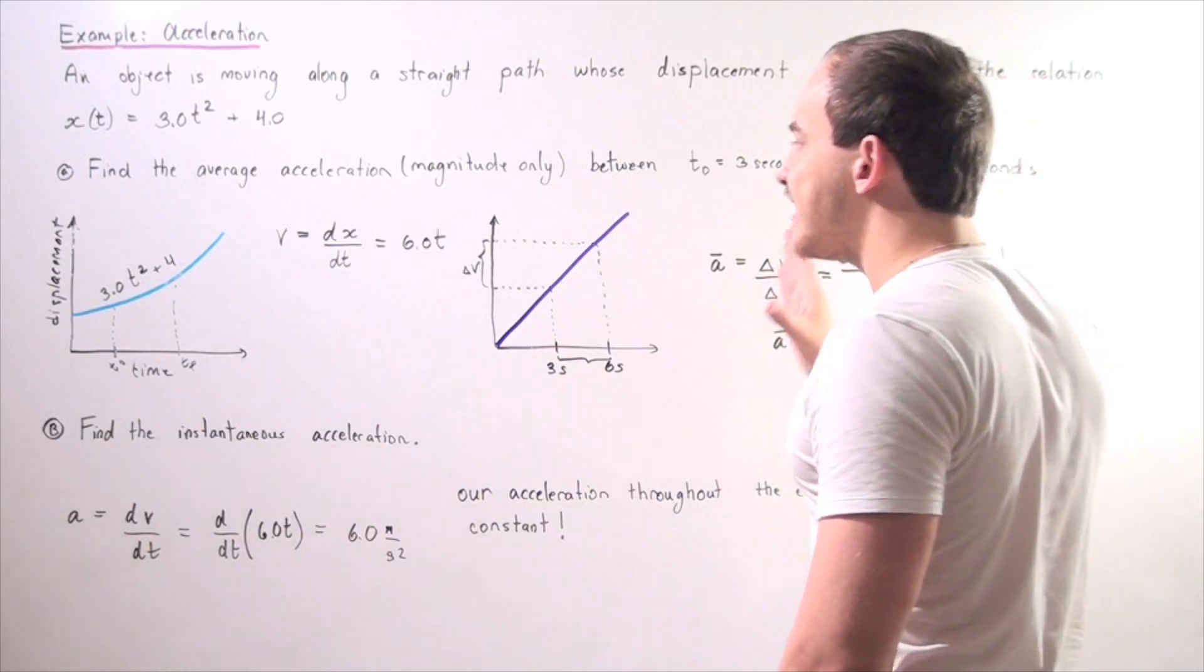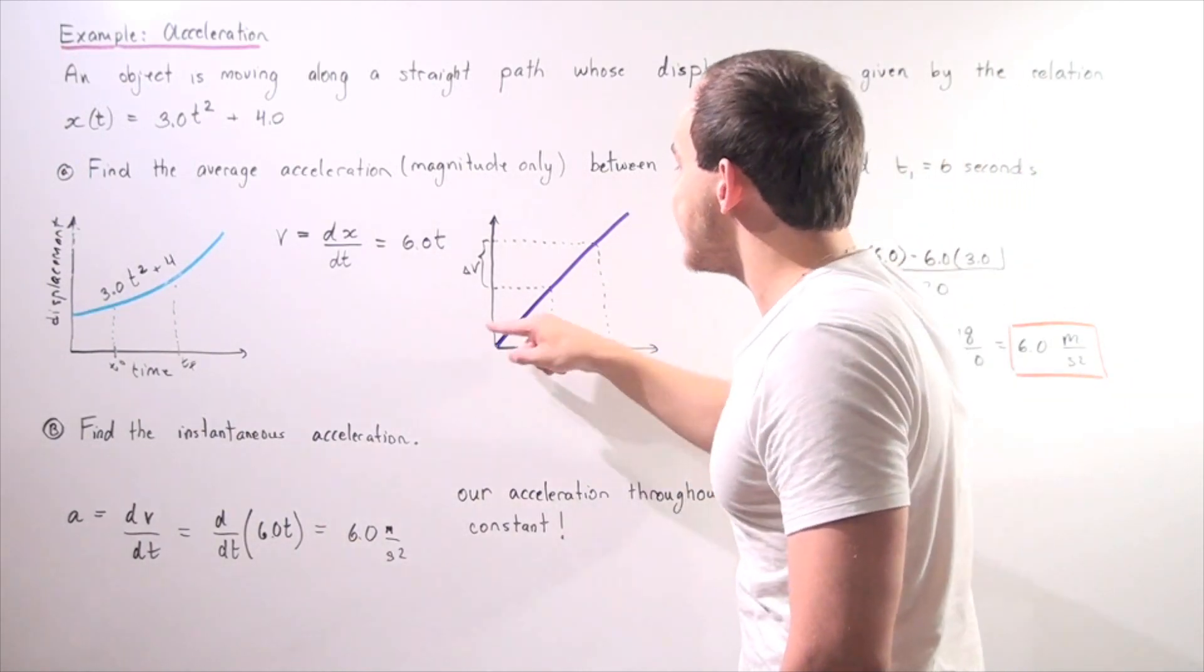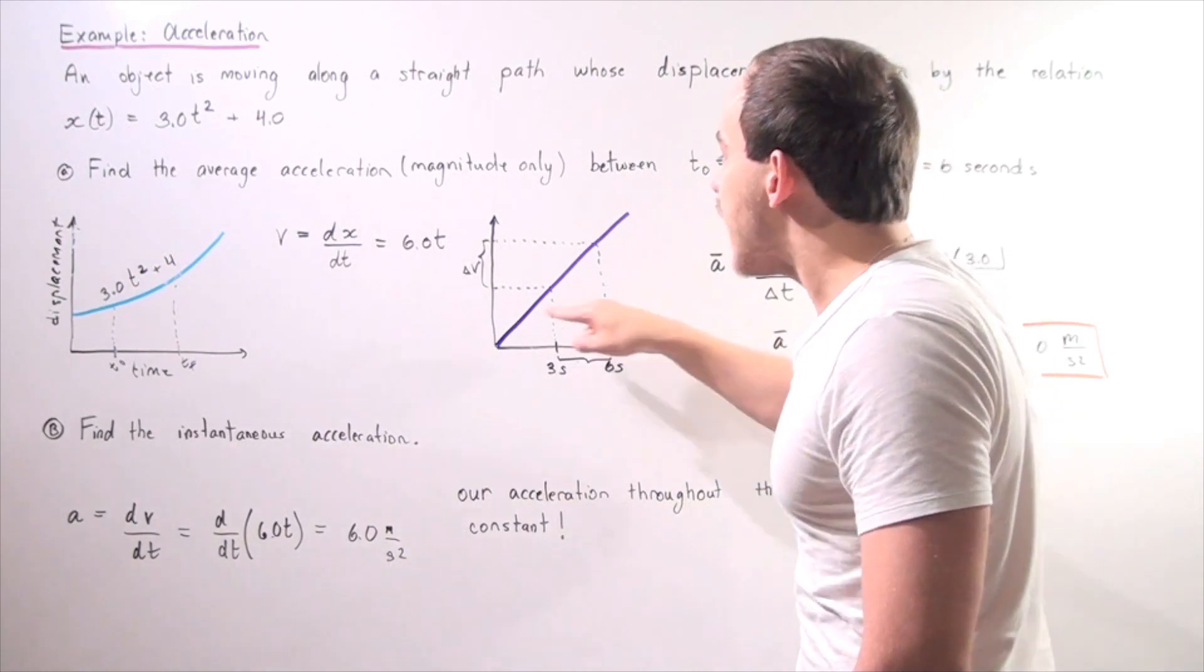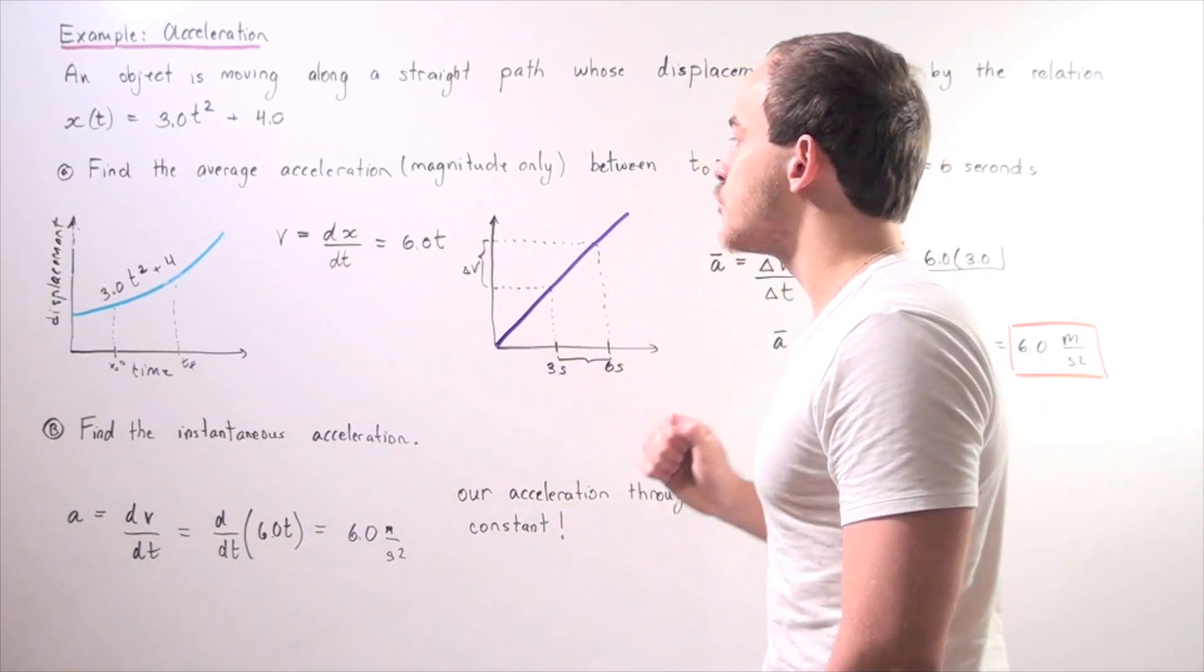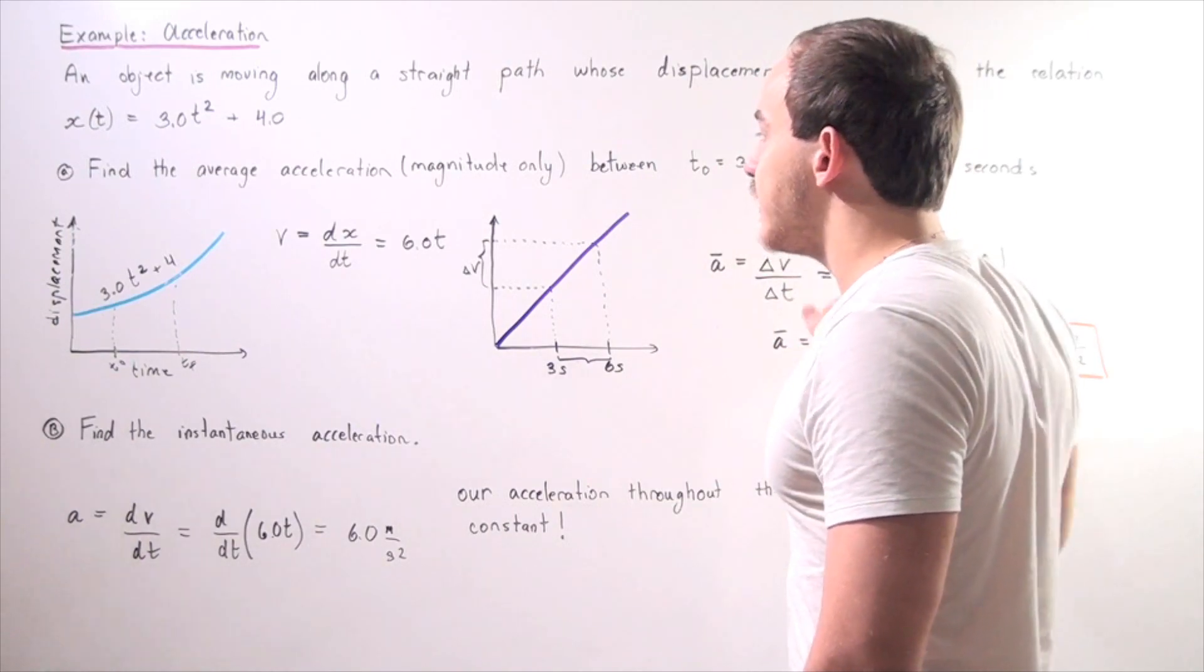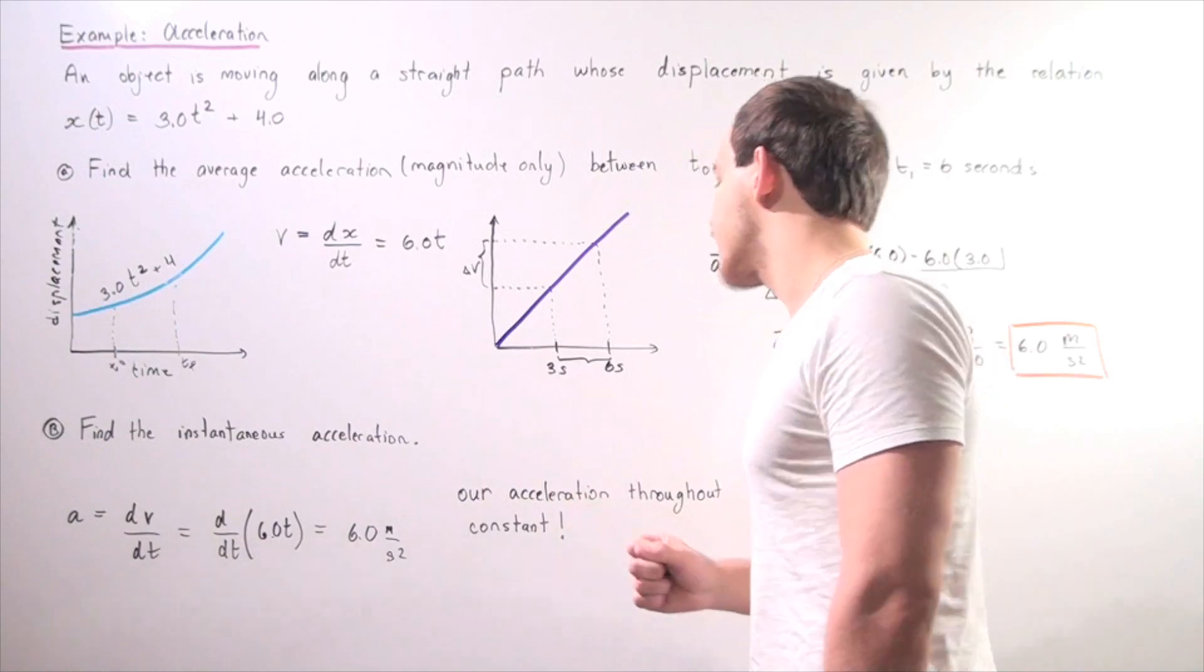Now, notice before we do any calculation, this is a straight line with a constant slope. In fact, the slope of this line represents our average acceleration. So after we do our calculation, our slope should end up at 6.0 meters per second squared.